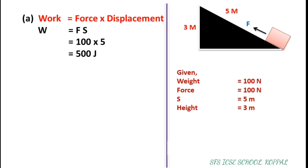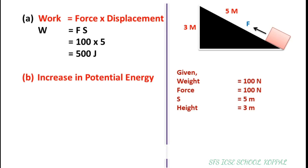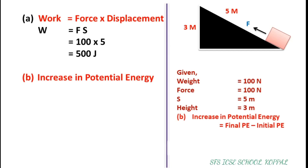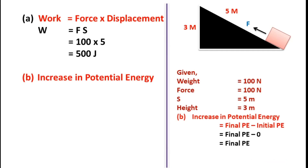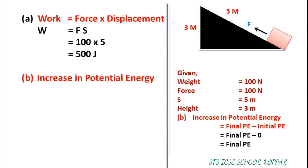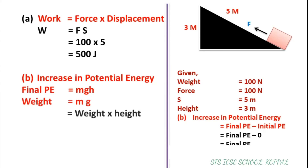Now, part B: increase in potential energy. We can see that the initial potential energy of the block is 0 because the initial height is 0. So, increase in potential energy equals final potential energy minus initial potential energy, which equals final potential energy. Potential energy equals mgh, and since weight equals mass into gravity, potential energy equals weight into height, that is 100 × 3 equals 300 Joules.